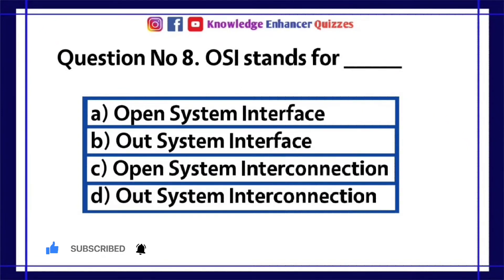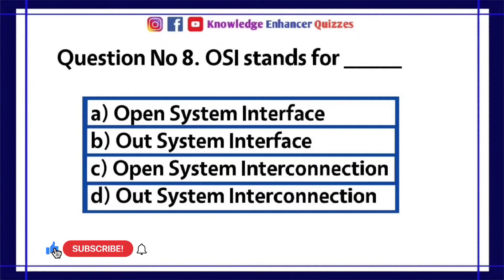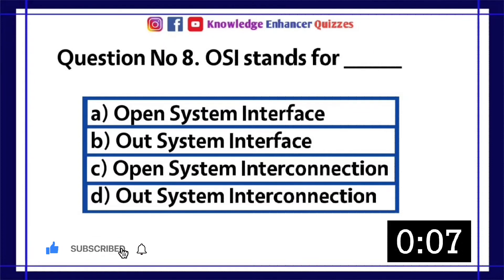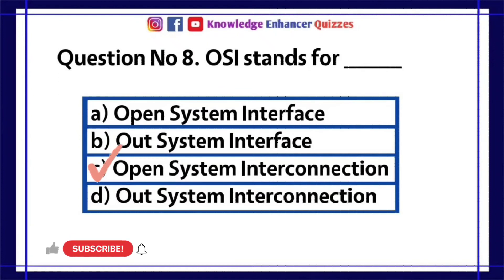Question number 8. OSI stands for — A. Open system interface. B. Out system interface. C. Open system interconnection. D. Out system interconnection. Option C is the right answer.